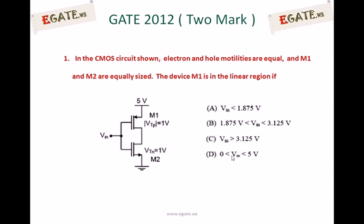And muN and muP are going to be same. And W by L ratio, width to length, i.e. aspect ratio of both transistors are same. All these things are given conditions.